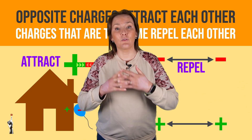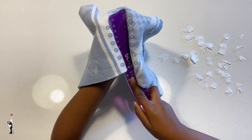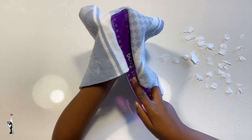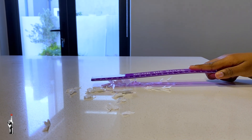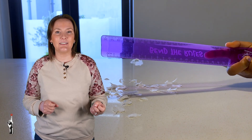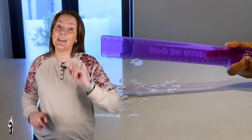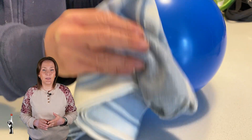Let's look at an example with a plastic ruler and a cloth. When we rub the ruler with a cloth, electrons move from the cloth onto the ruler. Now watch what happens when we bring the ruler close to these tiny bits of paper — they jump up and stick to it, just like magic. But it's not magic, it's static electricity. This shows us that opposite charges attract each other.